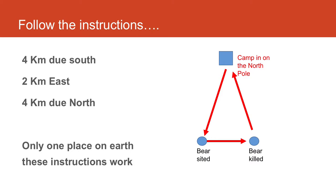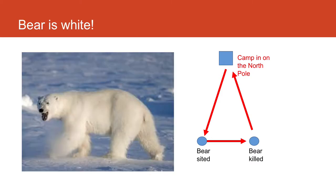That's because the campsite had to have been on the North Pole. The only place those instructions work — four kilometres due south, two east, then four due north again — is if the campsite was on the North Pole. So what colour was the bear? The bear had to be a polar bear, so it was white.